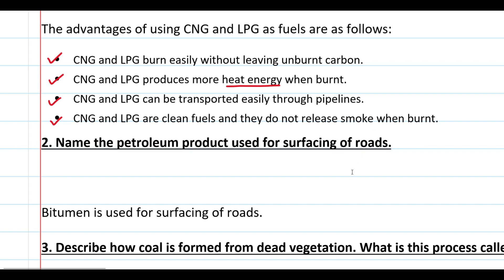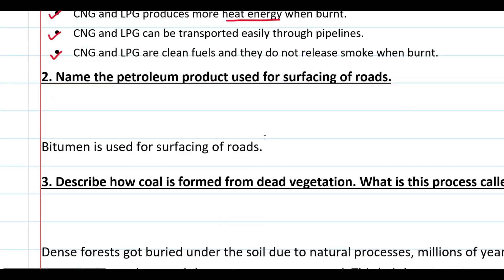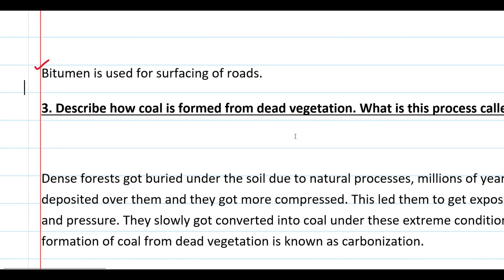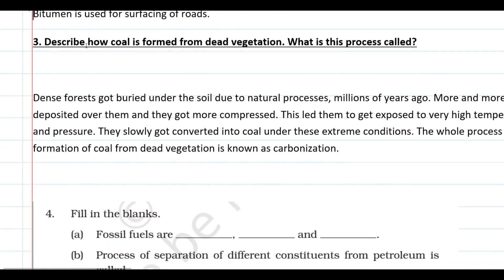Then comes the second question: Name the petroleum product used for surfacing of road. The petroleum product used for surfacing of roads is bitumen. Earlier it used to be coal tar, but now they use bitumen.